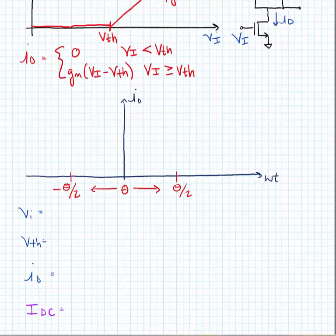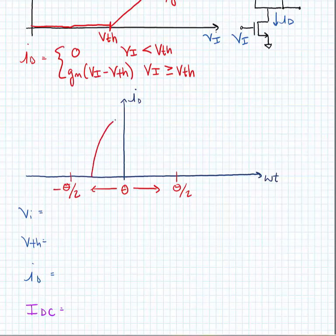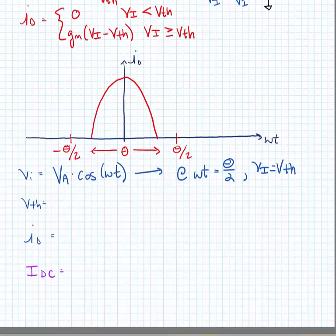If we look at this current with respect to time, we're going to see a waveform that looks something like this, where the conduction angle is implicitly less than 180 degrees, or from minus theta over 2 to theta over 2.